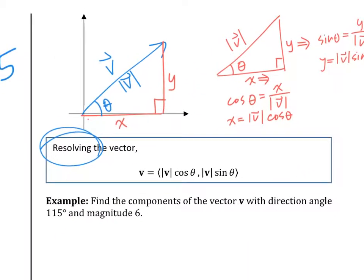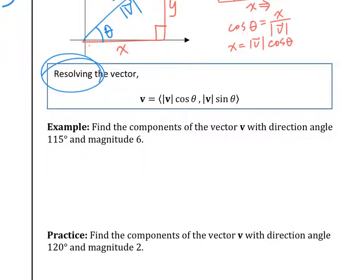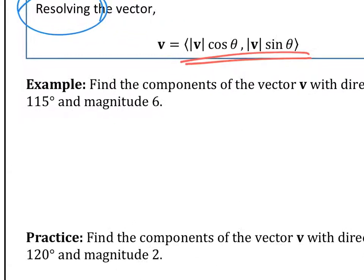So that is that: x is cosine, y is sine. That is resolving the vector into its component form. Let's look at one question: find the components of the vector V with direction angle 115 and magnitude 6. Remember, every vector has magnitude and direction.